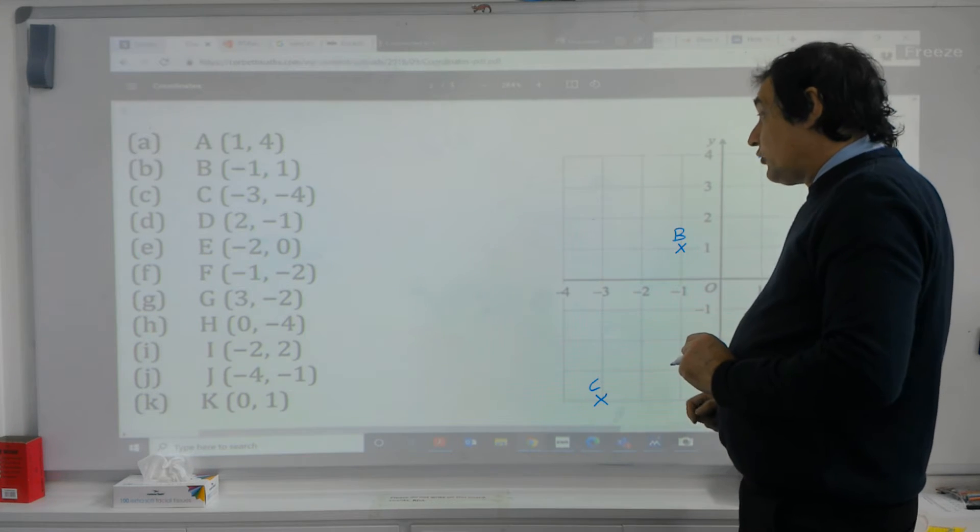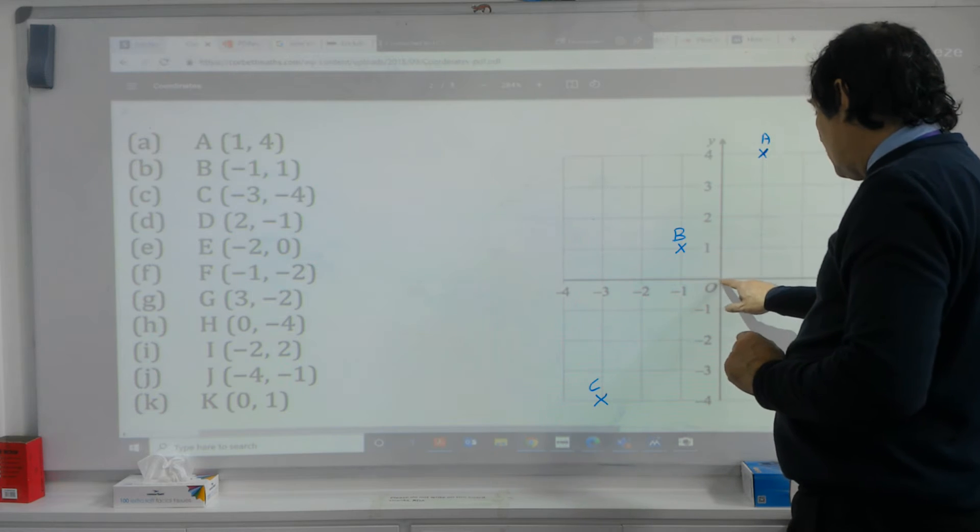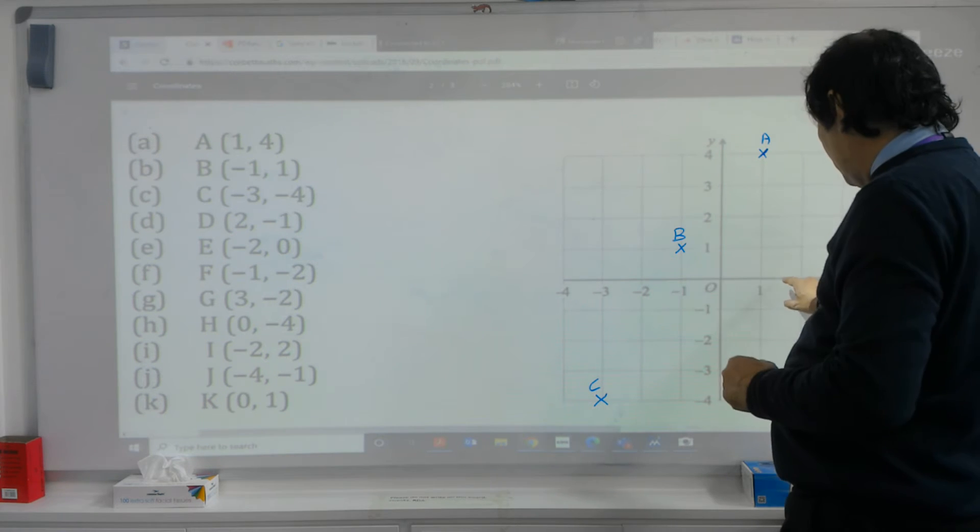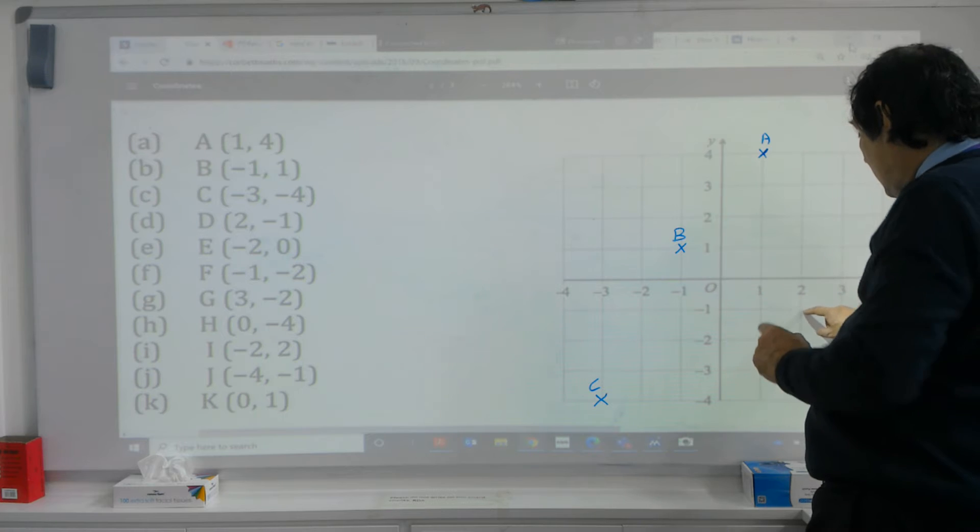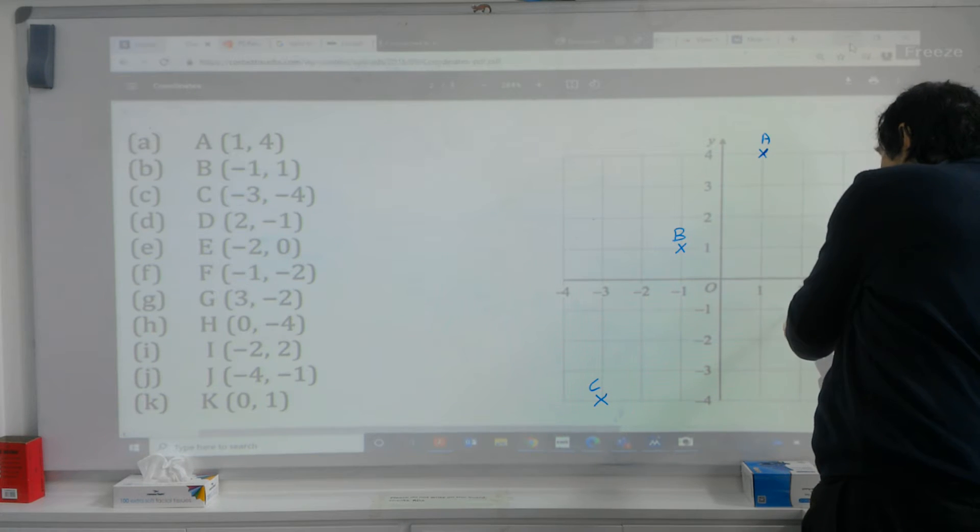D then, two minus one. So we go along to our right first of all, because it's a positive number, two, and then down to minus one there, which is a minus number, and mark that on D.